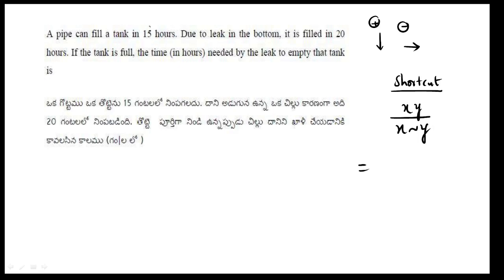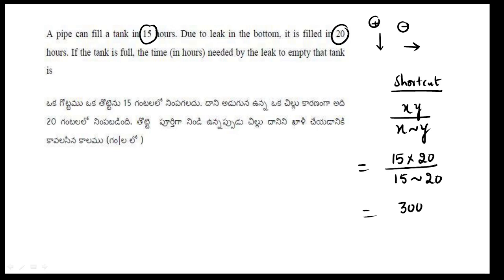xy means we multiply the two numbers: 15 hours and 20 hours. So, 15 into 20 divided by the difference of 15 and 20. That gives us 300 divided by 5, which equals 60 hours.